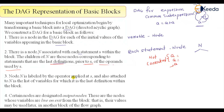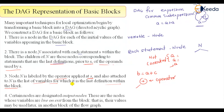The node n will be labeled by the operator. So if I say b = a * c, the node will be labeled by the operator — so there will be an operator attached to n. Also attached to n is the list of variables which are the last definition within the block. So node n is labeled by the operator applied on statement s, and also attached to n is a list of variables which uses the last definition within the block.